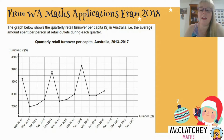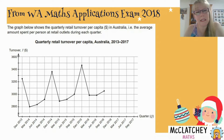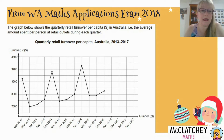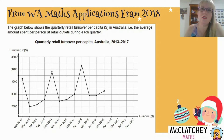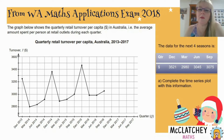We have a graph that explains quarterly retail turnover per capita in Australia — that's the average amount people are spending at retail outlets every quarter of the year. There's a pattern of seasonality with big spikes in December, which we'd expect — that's when everyone does their Christmas shopping. Then there's a big fall off after December when everyone's run out of money, and spending gradually increases heading towards the end of the year again. The question asks us to complete the time series plot using the data given for the next four seasons.